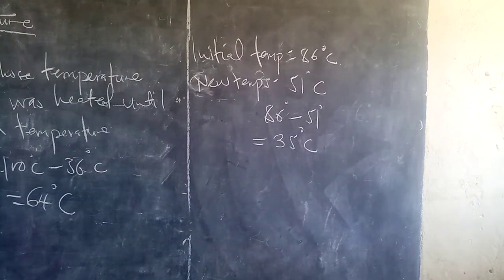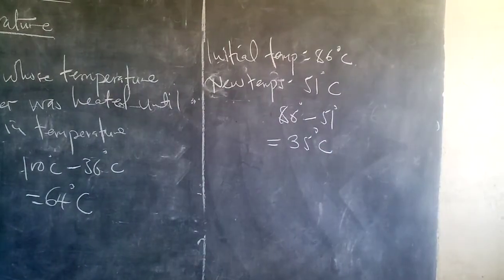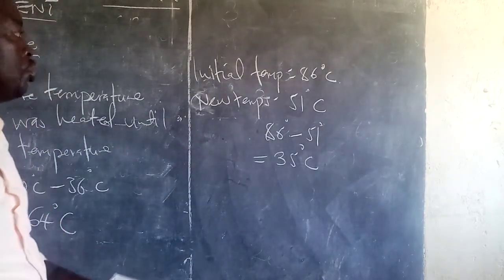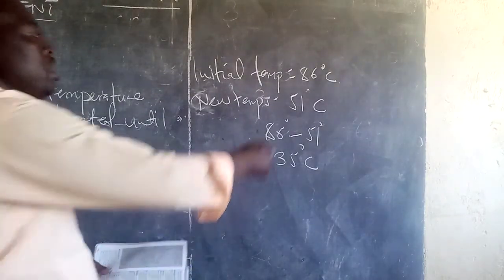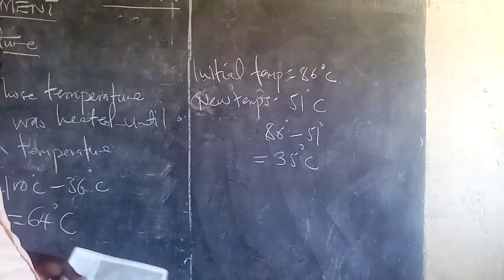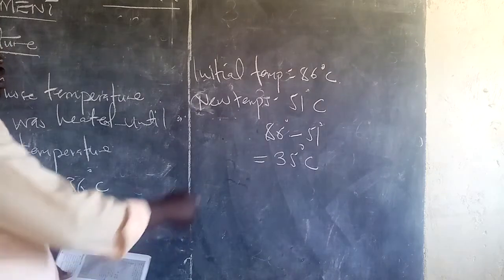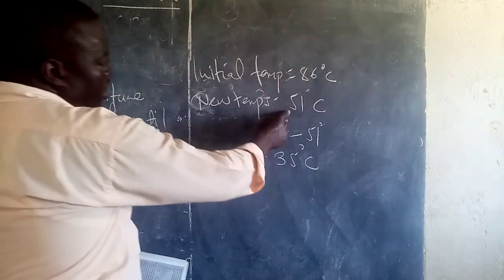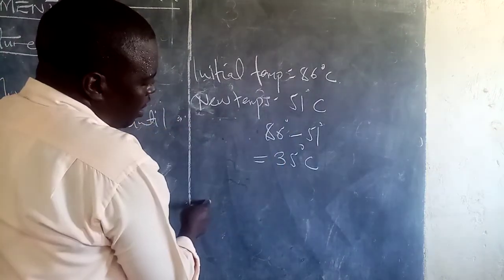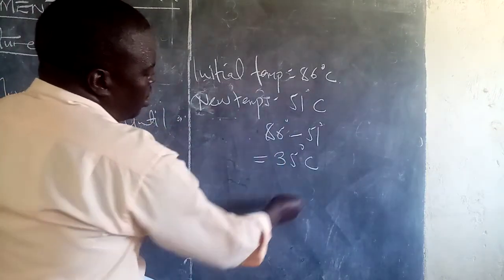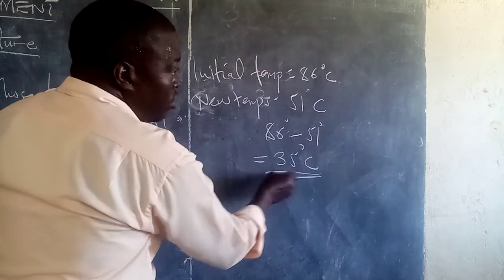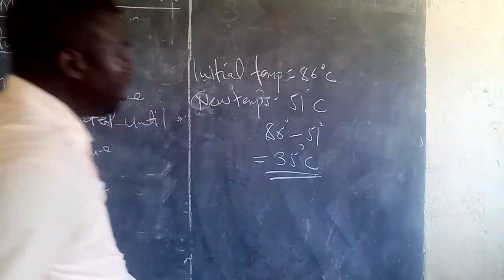The temperature was dropping. The initial was at 86 and it dropped by 51 degrees Celsius. So the current temperature is 35 degrees Celsius. We are talking about the thermometer reading.